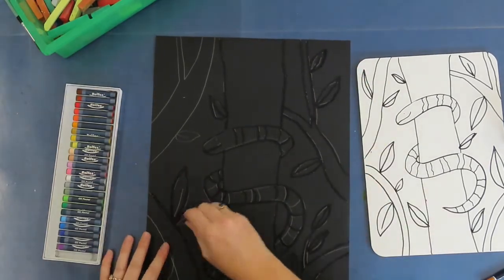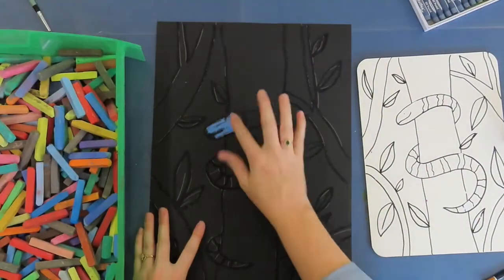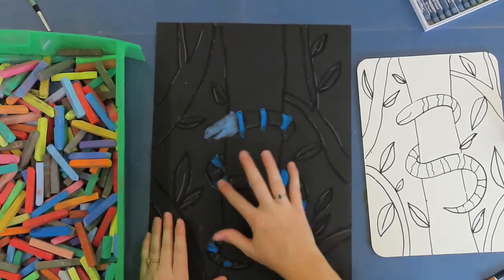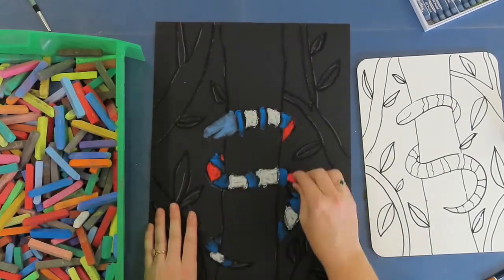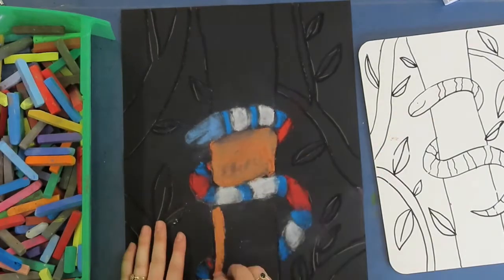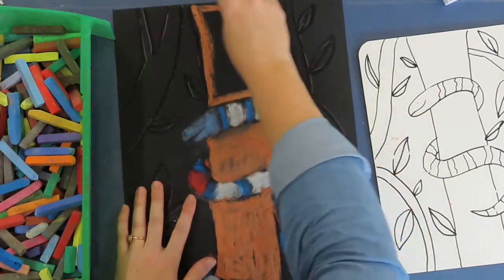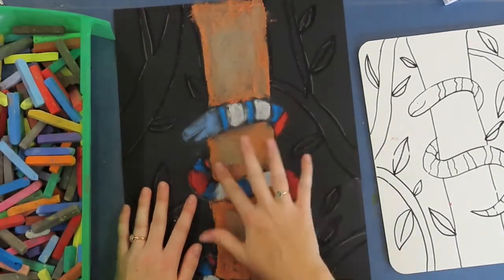And the chalk is lots of fun because you use your fingers and you get to smudge the colors. So choose the colors that you'd like on your snake, and then what you're going to do is that you're going to take your finger and you're going to smudge that color in the section that you would like it to be.